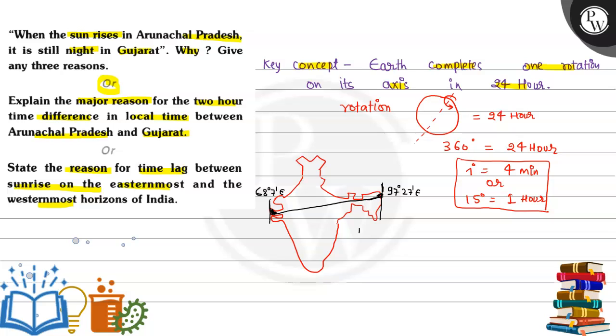This is approximately 30 degree longitude difference. As we know, 1 degree equals to 4 minutes. So 30 degrees equals to 30 into 4 equals to 120 minutes. 120 minutes equals to 2 hours. So that is the answer to our main question, why there is a 2 hour difference.